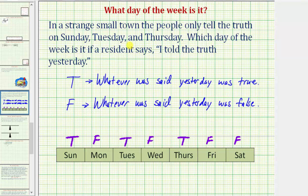Now let's determine what day it would have to be if the resident says 'I told the truth yesterday.' It can only be one of the truth-telling days — Sunday, Tuesday, or Thursday — if whatever was said yesterday was true. But notice the day before Sunday is Saturday, and whatever is said on Saturday is false, and therefore it cannot be Sunday.